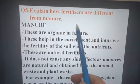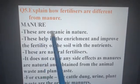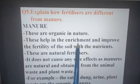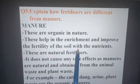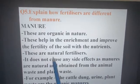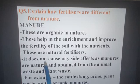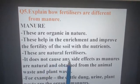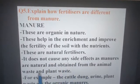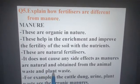Explain how fertilizers are different from manure. First, what is manure? Manure is organic in nature. It helps in enrichment and improves the fertility of the soil with nutrients. Because manure is organic and natural, it exists in nature, so it is a natural fertilizer. It does not cause any side effects because manure is obtained naturally from animal and plant waste.